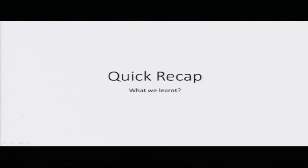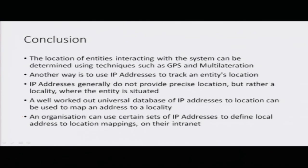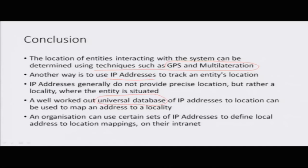To recap: the location of entities interacting with a system can be determined using techniques such as GPS, which uses satellites, and multilateration, which is done by mobile service providers. Another way entities can be identified is by their IP address, which can then be mapped to a particular location using a universal database. Finally, an organization can use certain set of IP addresses to define local addresses using specific reserved local address ranges.